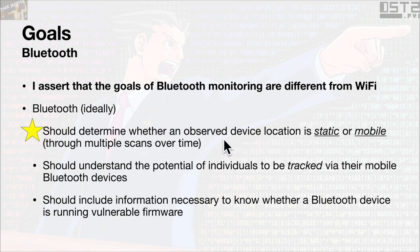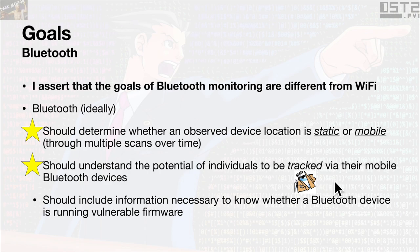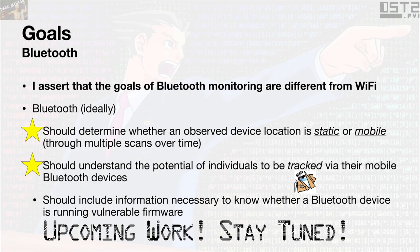Multiple scans over time can help determine static vs. mobile devices, and this research helps with that. There's also understanding the potential for individuals to be tracked by their Bluetooth devices — this research shows examples of that. Most importantly, what motivated this work is that it should be possible to know whether a Bluetooth device is running vulnerable firmware. This talk only addresses that partially, but I will have additional upcoming research that will address it more thoroughly.